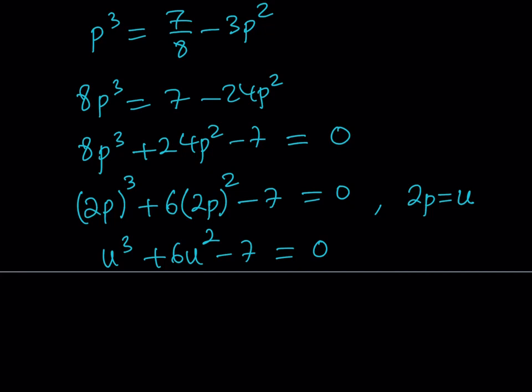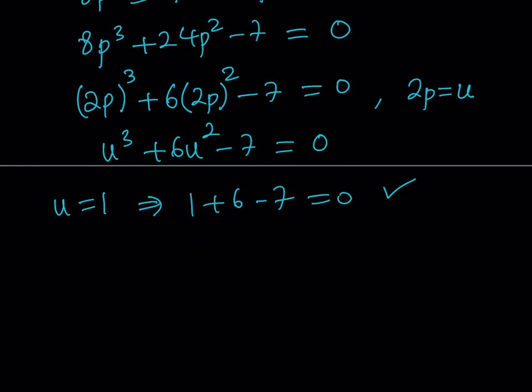This is still a cubic but at least it's monic, and monic cubics are easier to solve. One of the first things to check for a cubic or higher polynomial is the sum of the coefficients — if the sum is 0 then u equals 1 is a solution. Here, 1 plus 6 minus 7 equals 0, which is verified. So u equals 1 is a solution and u minus 1 is a factor.